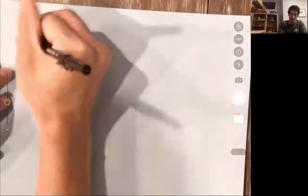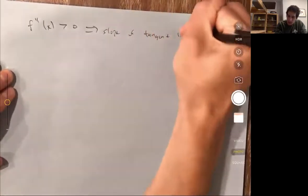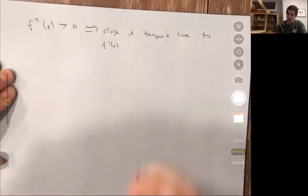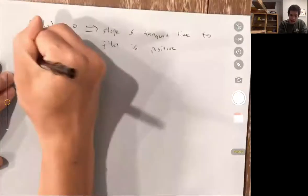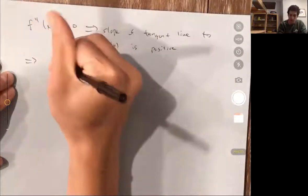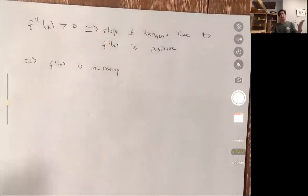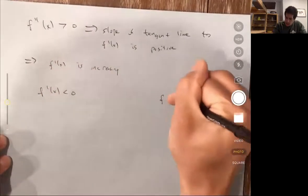A positive second derivative means that the derivative of the derivative is positive — so the slope of the tangent line to f prime of x is positive. This means that f prime of x is increasing, so f prime of x is getting bigger. Now I want to break into two parts: one where f prime of x is less than 0, and the other where f prime of x is greater than 0.